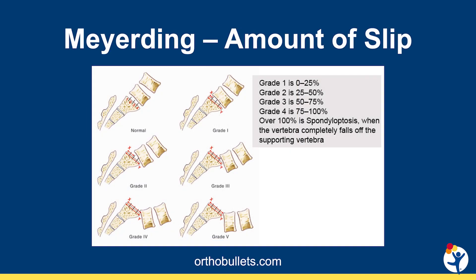The Meyerding classification is the simplest radiographic classification. This is based upon the amount of slippage of L5 on S1, with grades 1 and 2 being less than 50% slippage and grades 3 and 4 being greater than 50% slippage. We typically consider grades 1 and 2 as low-grade slips and grades 3 and 4 as high-grade slips.